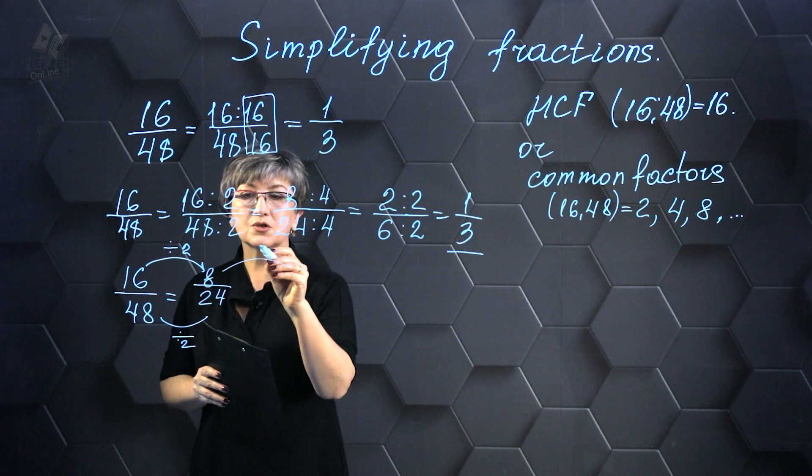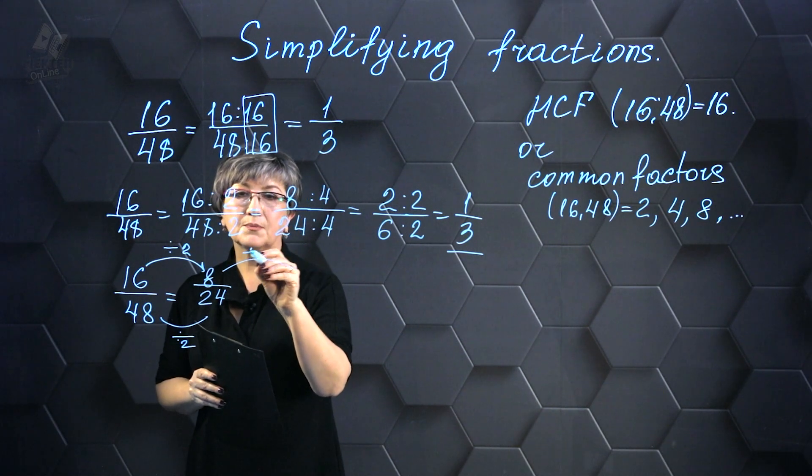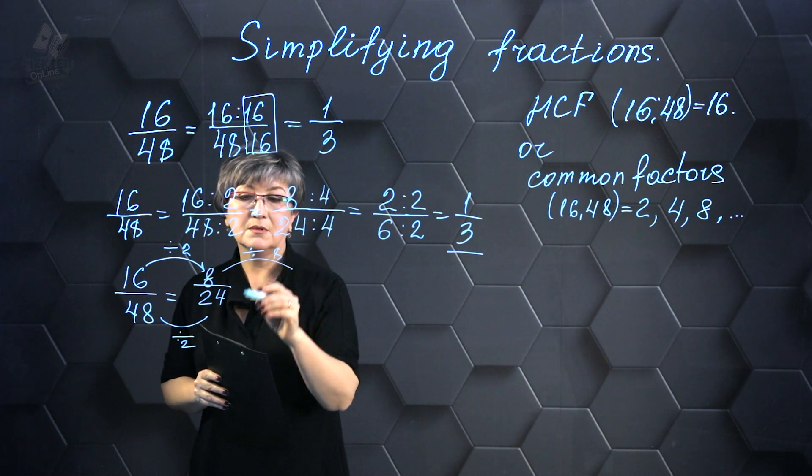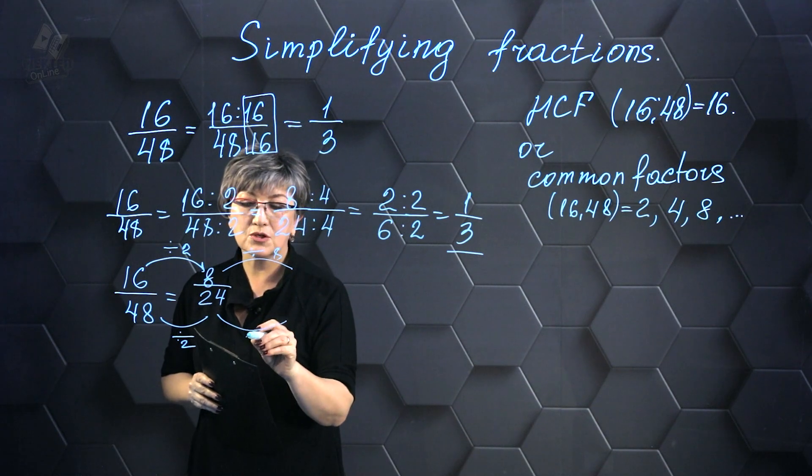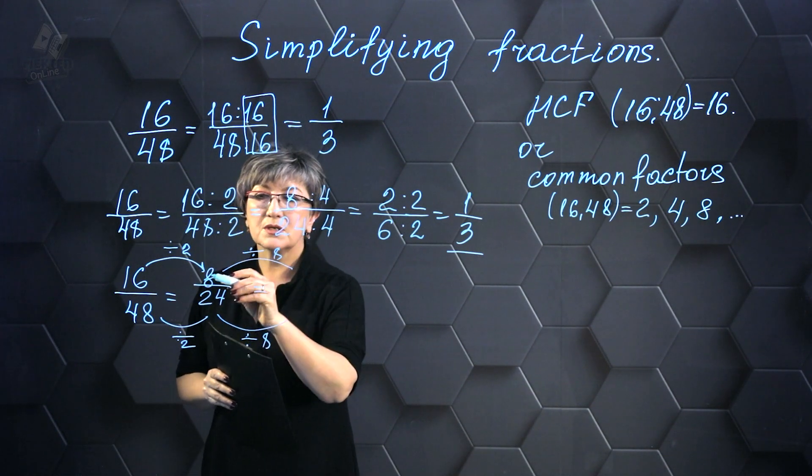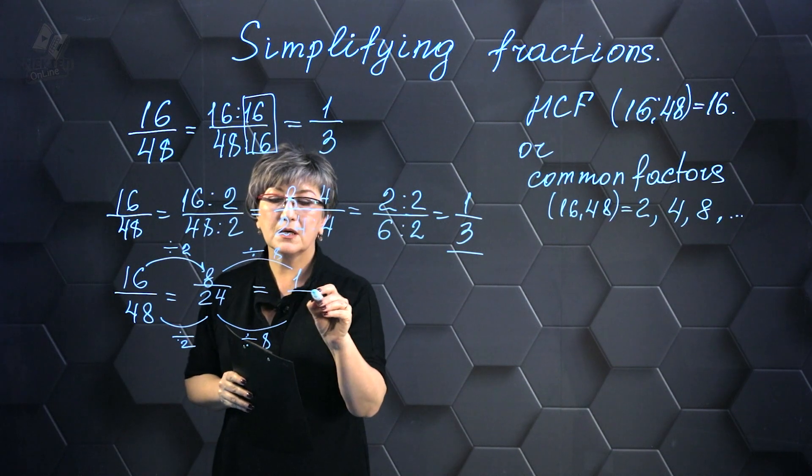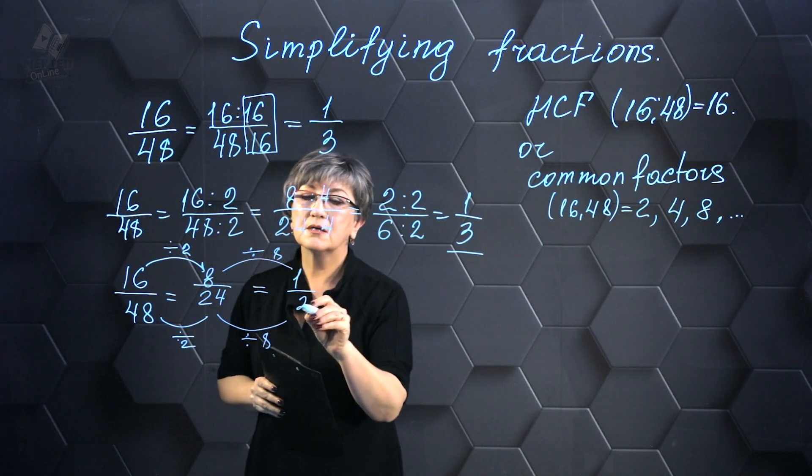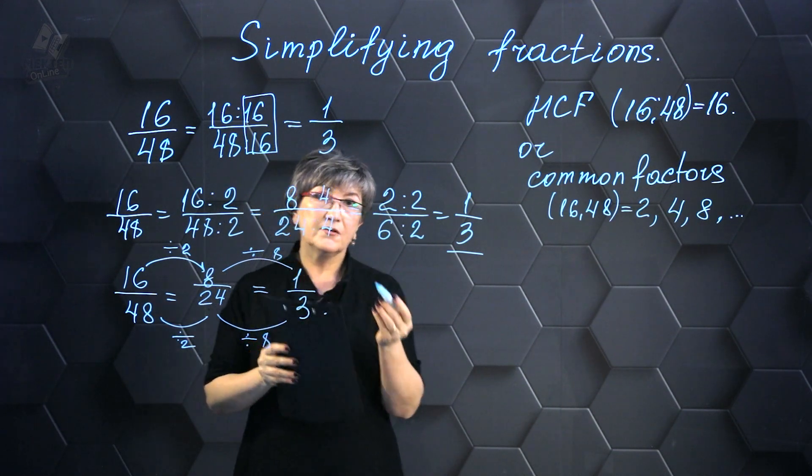And then you can divide, for example, by 8 if you want to further reduce the value. And this denominator can also be divided by 8. And then we will get 8 divided by 8, it will be 1, and 24 divided by 8 will be 3.